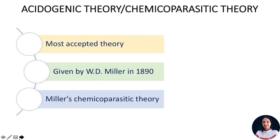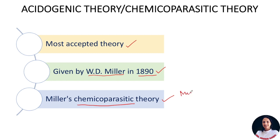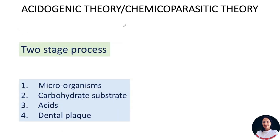Let's start with the acidogenic or chemico-parasitic theory. This theory is the most accepted theory describing the cause of dental caries, and it was given by Miller in 1890. That's why it's also known as Miller's chemico-parasitic theory. Miller said caries is a chemico-parasitic process where caries is caused by a variety of microorganisms and acids in the oral cavity, which are produced by the action of microorganisms.